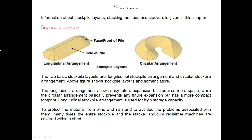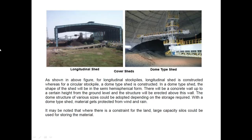Longitudinal stockpile arrangement is used for high storage capacity to protect material from wind and rain. The stacker and reclaimer machines are often covered within a shed. For longitudinal stockpiles a longitudinal shed is constructed, while for circular stockpiles a dome-type shed is used. In the dome-type shed the shape is semi-hemispherical, with a concrete wall up to a certain height and structure erected above it. The dome structure can be adopted in various sizes depending on storage required.